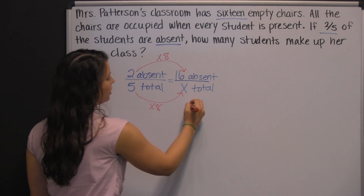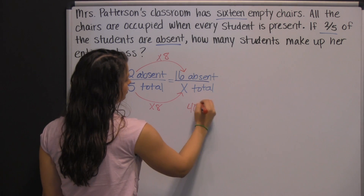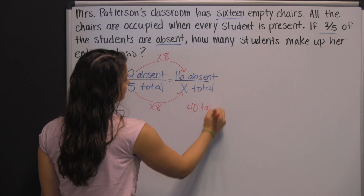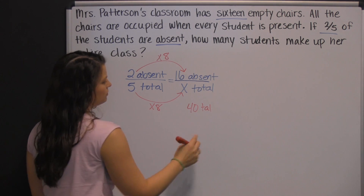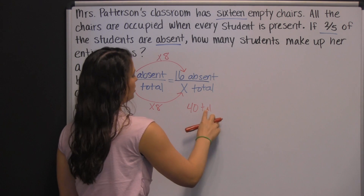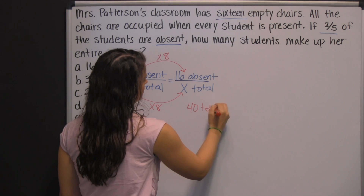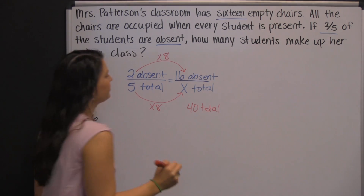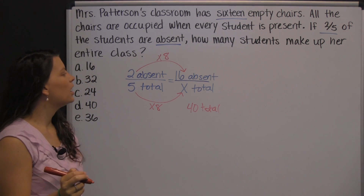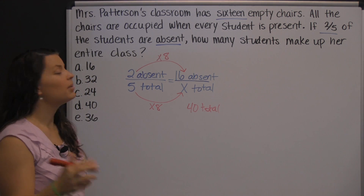Well, you just multiply times eight. So be consistent — do the same thing to your denominator. Five times eight is forty, so there are forty total students.